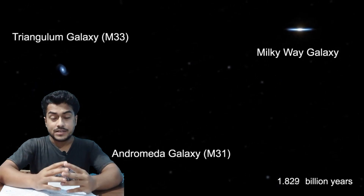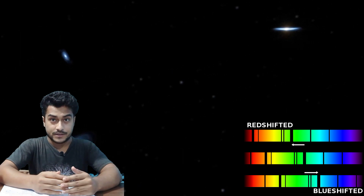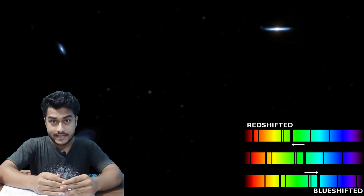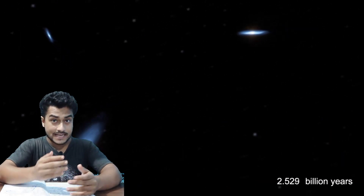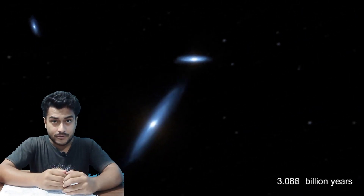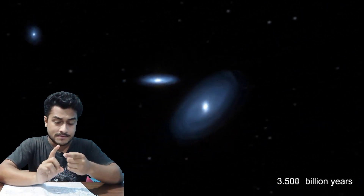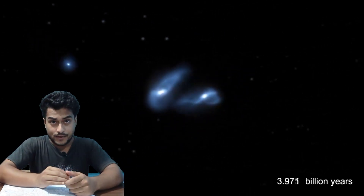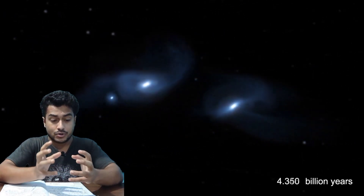By measuring the blue shift from the light spectrum of the Andromeda galaxy, we can calculate its approaching velocity from the Milky Way galaxy. It is to be noted that the first impact of these two galaxies is after 4 billion years, but the total merging of these two galaxies will occur only after 6 billion years.